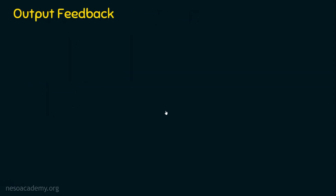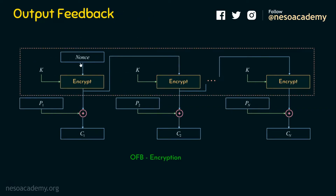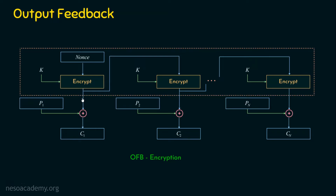In OFB encryption, we have an initialization vector, just like we had in CFB. This initialization vector is a nonce, and it is given to the encryption algorithm. This encryption algorithm may be any block cipher like DES or AES. It takes the input as well as the key, and this key is common throughout the process because this is symmetric encryption. The output here is not the ciphertext, because we are not encrypting the plaintext directly — we are getting the encrypted output for the nonce.